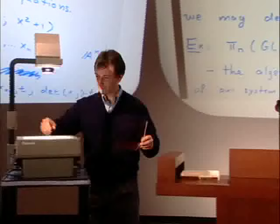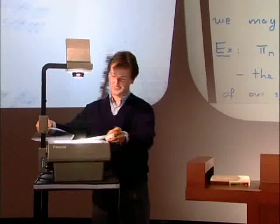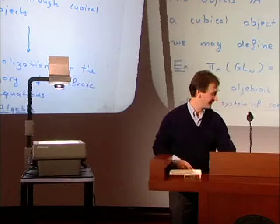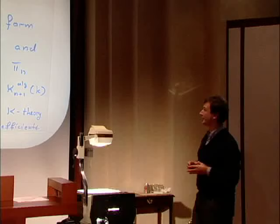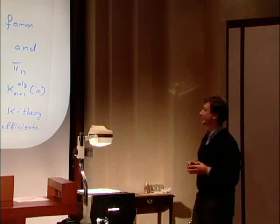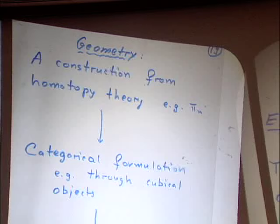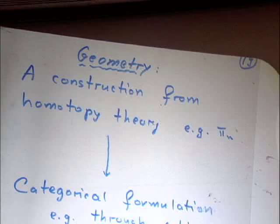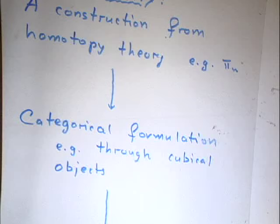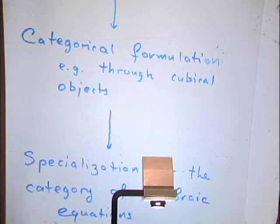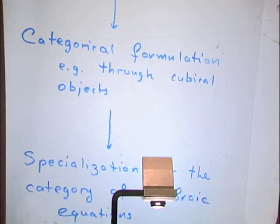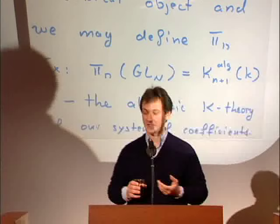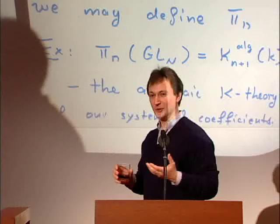Let me get a little philosophical. We started with geometry — the category of topological spaces. We invented something about this geometrical world using our basically visual intuition: the notion of pieces comes exclusively from visual intuition. We somehow abstract it and rewrite it in terms of category theory, which provides this connecting language. Then we apply it in a new situation — the situation of algebraic equations, which is purely algebraic. What we get is a fantastic way to translate geometric intuition into results about algebraic objects. And that, from my point of view, is the main fun of doing mathematics. Thank you.